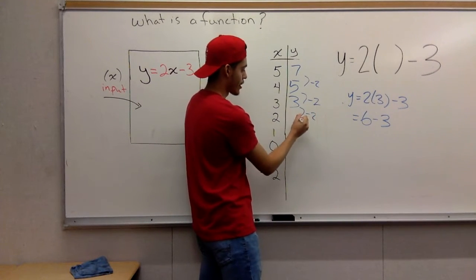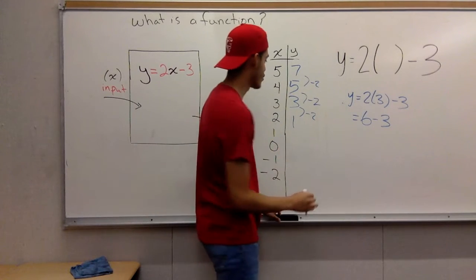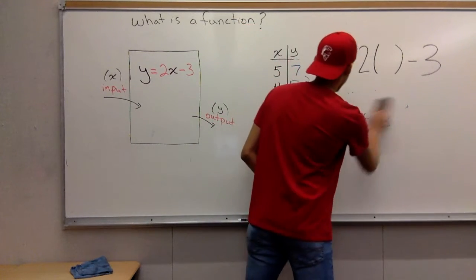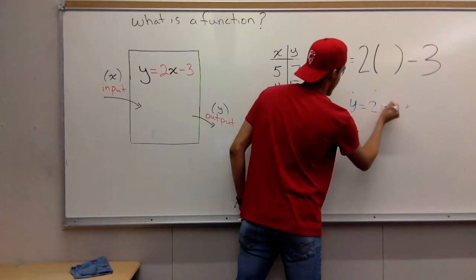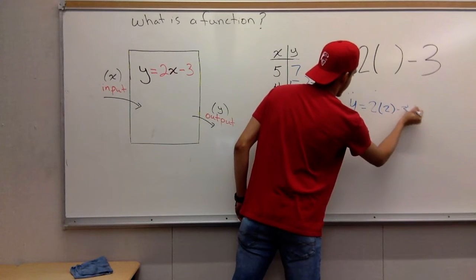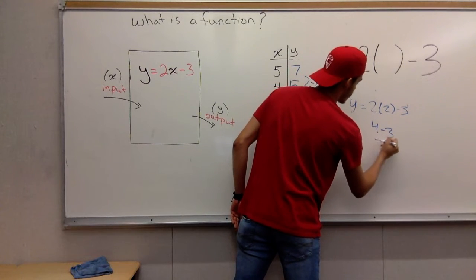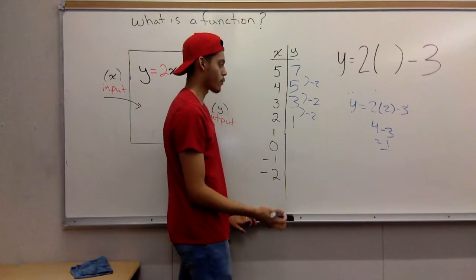So what are you going to get for the next one? If you subtract 3 minus 2, you're going to have to get 1. I'll prove it to you right now. You have Y equals 2 times 2 minus 3. 2 times 2 is 4. 4 minus 3 equals 1. As you see, the pattern works.